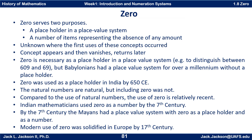Our hero, zero, serves two purposes. It's a placeholder in a place value system, and it also represents a number in and of itself — a number of items representing the absence of any amount. This concept is so normal and so pervasive in our number system that you might think of this as one of the most basic numbers out there, and in a way it is.